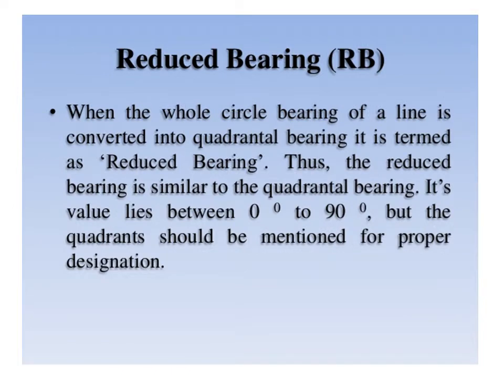This slide refers to reduced bearing. When the whole circle bearing of a line is converted into a quadrantal bearing, it is termed as reduced bearing. The reduced bearing is similar to the quadrantal bearing, and its value lies between 0 to 90 degrees. The quadrant should be mentioned for proper designation.